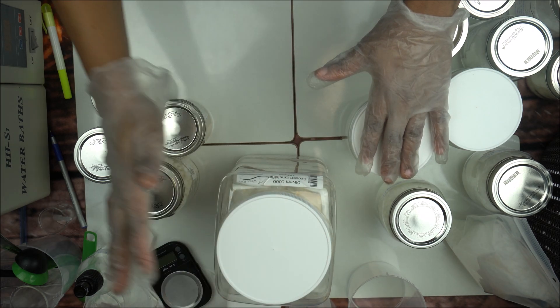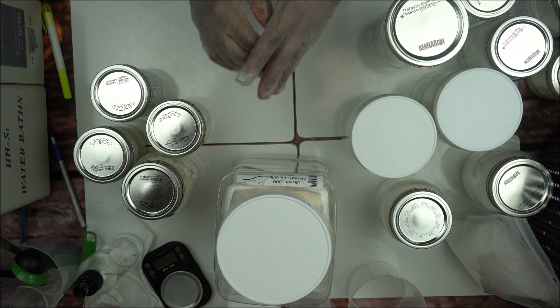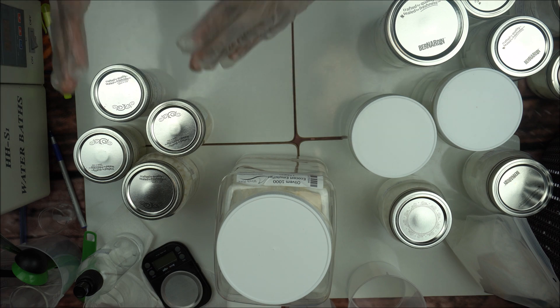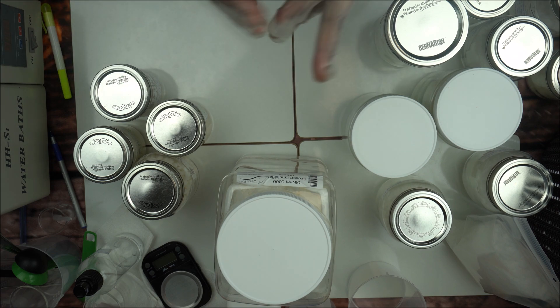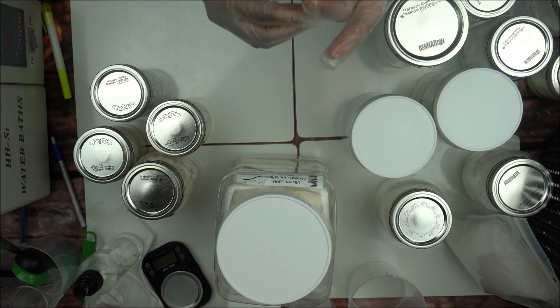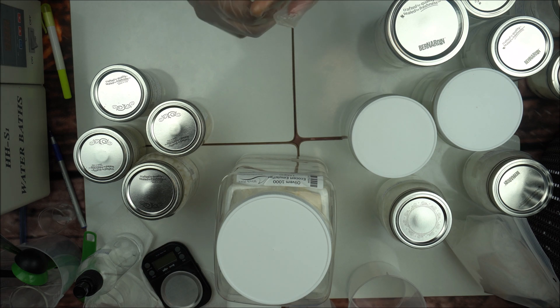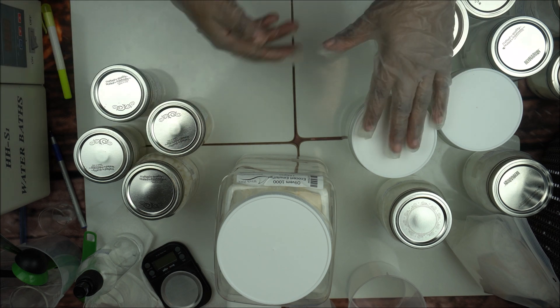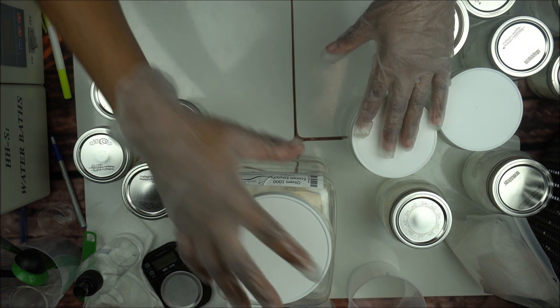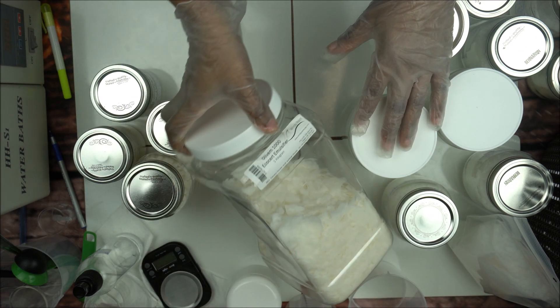Let me start with the emulsifiers. The different emulsifiers are used to mix oil with water. That's how we make our lotion, for instance we mix oil with water to make our lotion or even hair conditioner.